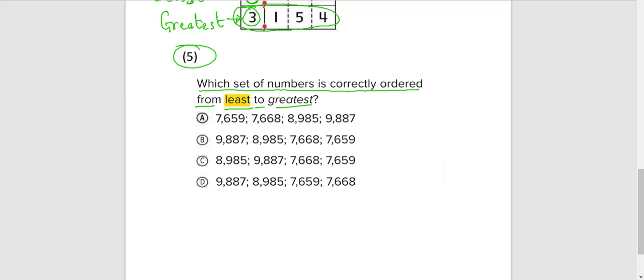We have a couple of numbers here. Let's write out all the numbers this way. 7,659. That is the first number here. The second number here is 7,668. The third number, 8,985. And the last number, 9,887. Let's order this number from the least, the smallest. Consider the first number. This is 7, this is 7, this is 8, and this is 9.